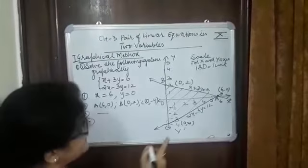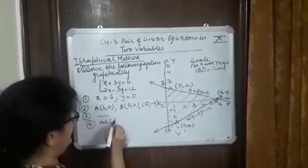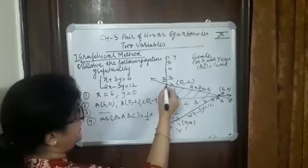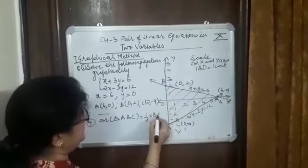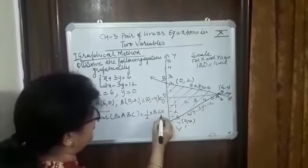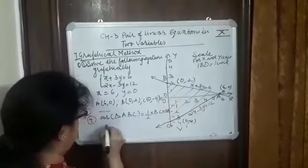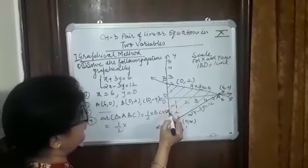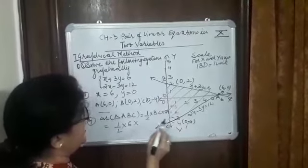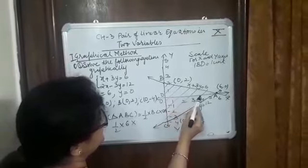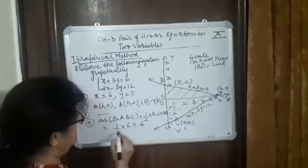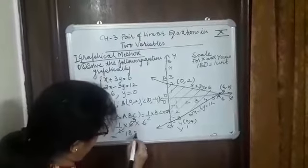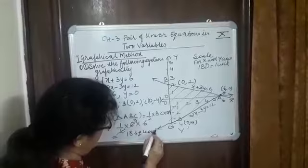Fourth part: find the area of the triangle so formed. So area of triangle ABC is equal to half into BC into OA. So this is half, BC is 1, 2, 3, 4, 5, 6 units and OA is 1, 2, 3, 4, 5, 6 units. So this is 3 times 6, which is 18 square units.